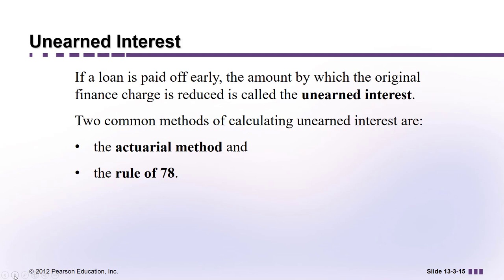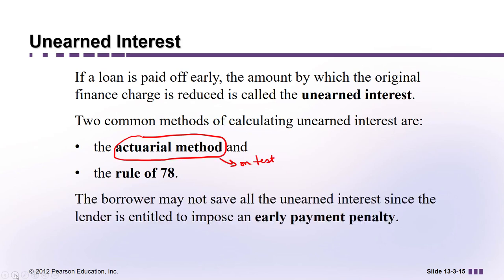I'm only going to have the actuarial method on the test. Sometimes the borrower, based on the contract, might not get all of the unearned interest back — there might be some kind of early payment penalty, so you have to pay attention to your contract.